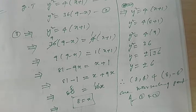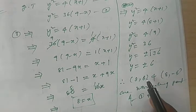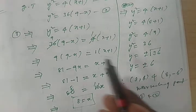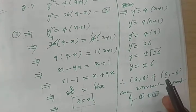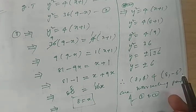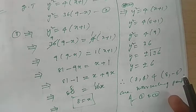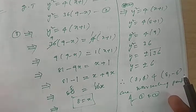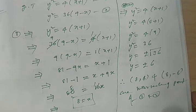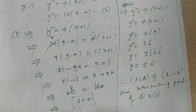Now we have to find the angle between the two curves at (8, 6) and at (8, −6), and show that the angle is 90 degrees, because we have to show these two curves cut each other orthogonally. We will first find the slopes of both curves at these points.